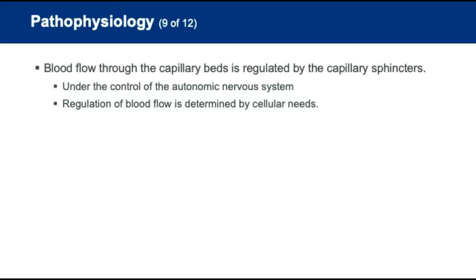Blood flow through the capillary beds is regulated by capillary sphincters — circular muscle walls that constrict and dilate. These sphincters are under control of the autonomic nervous system, which regulates involuntary functions such as sweating and digestion. They respond to stimuli such as heat, cold, or the need for oxygen or waste removal. The regulation of blood flow is determined by cellular needs.